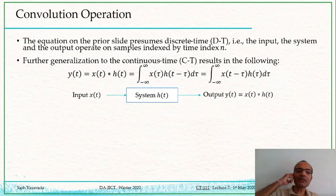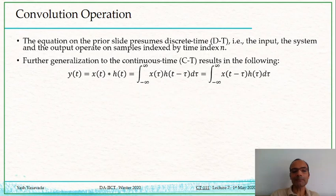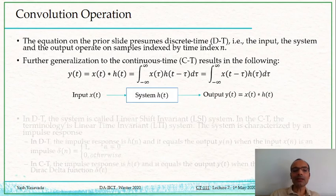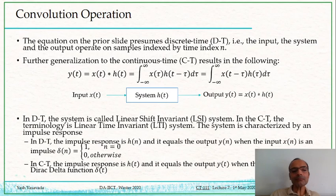And so in the case of continuous time, the input and the system and the output, all are continuous analog signals. There is no discretization of the time axis.